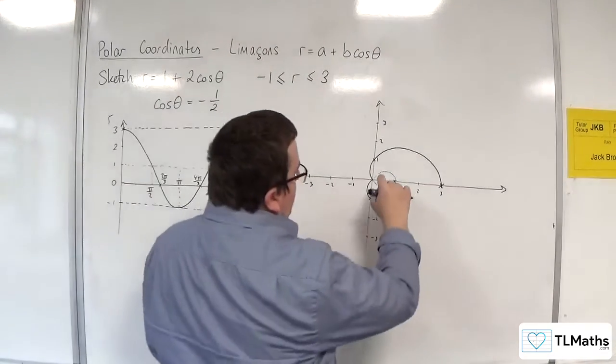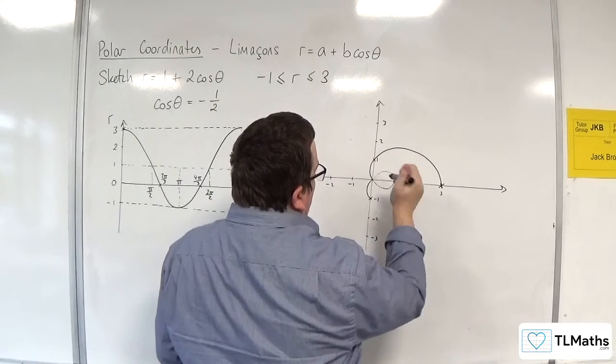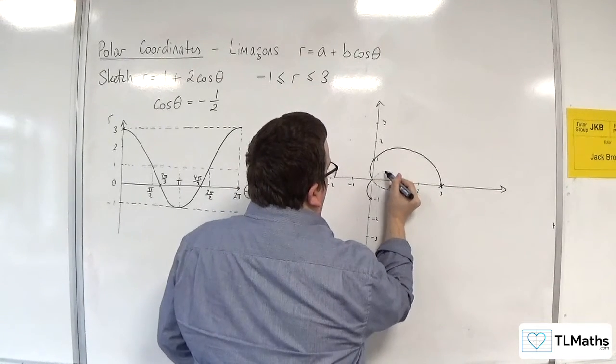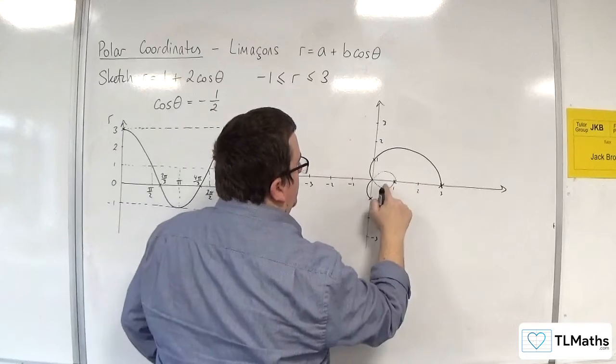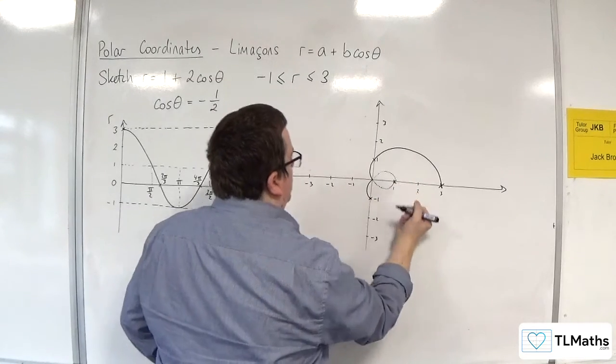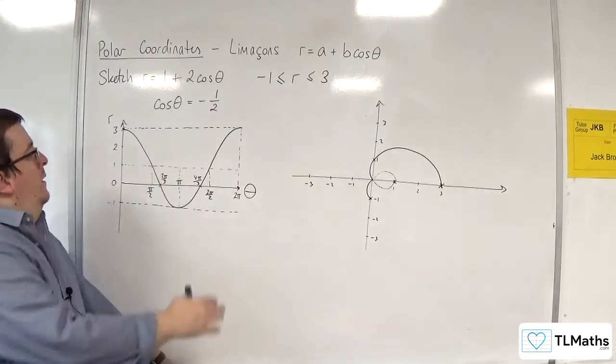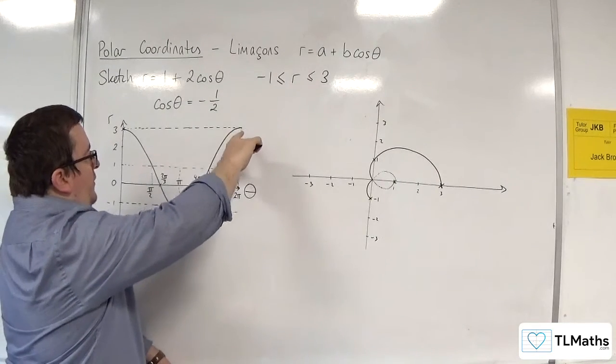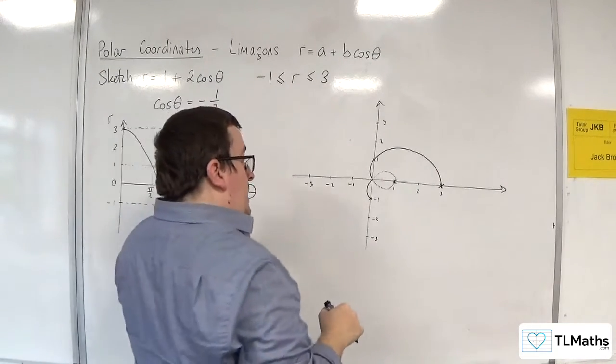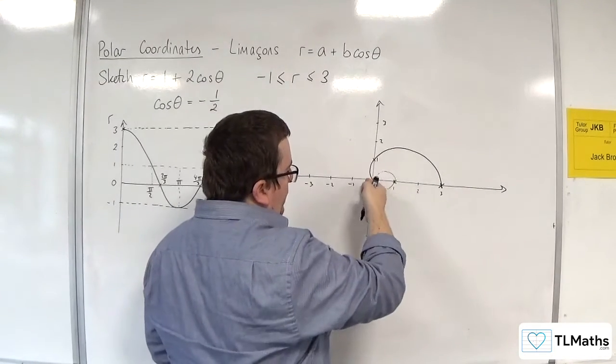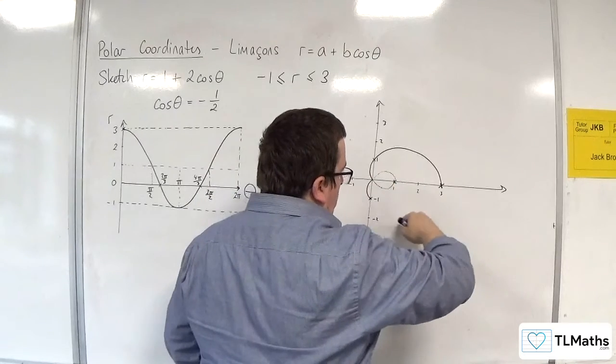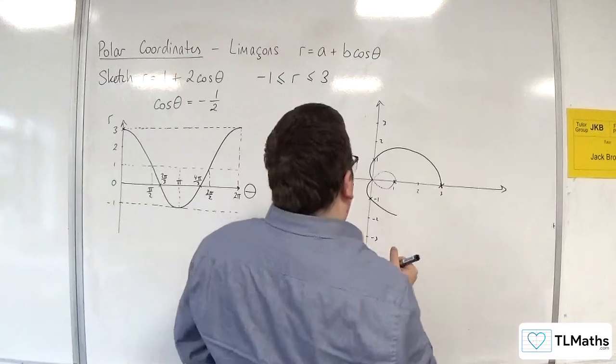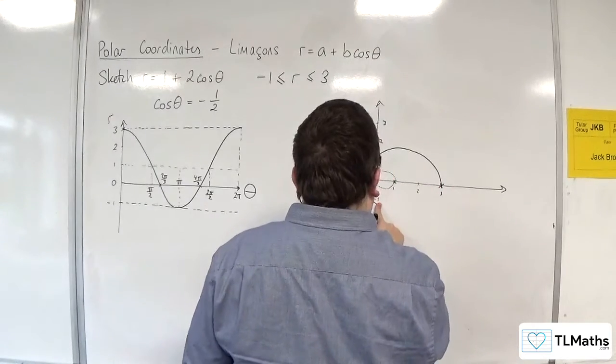So make it clear on your diagram, on your sketch, that you've got dashed lines here. Past that point, we're going back round to 2 pi, r is equal to 3. So remember, r is your distance away from the origin, so we're coming back round to 2 pi.